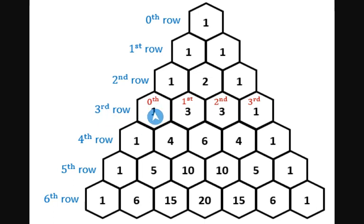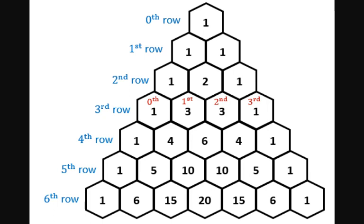So the third row would have terms zero, one, two, three. The fifth row would have terms zero, one, two, three, four, five, six. So let's take a look at these first problems to get us familiar with that.